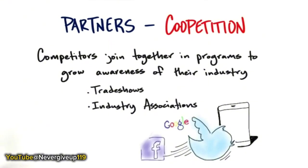Co-opetition is another potential area for partners. Also industry specs and technical committees — you'll see competitors who outside that building would do nothing better than run each other over with a car, actually sitting together and trying to define joint technical specifications.